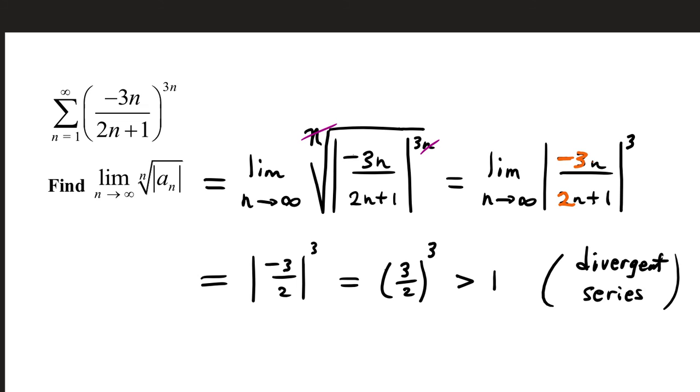So be very careful when you write this in here. Now absolute value eventually is going to make this term positive. We'll get to it at the end. The nth root, nth power, those cancel, so we are left with the limit as n approaches infinity of absolute value negative 3n over 2n plus 1.